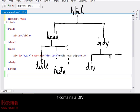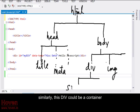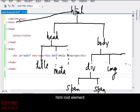Body tag is an immediate child of the HTML element. It contains a div. Could contain more tags, like img, span. Similarly, this div could be a container.